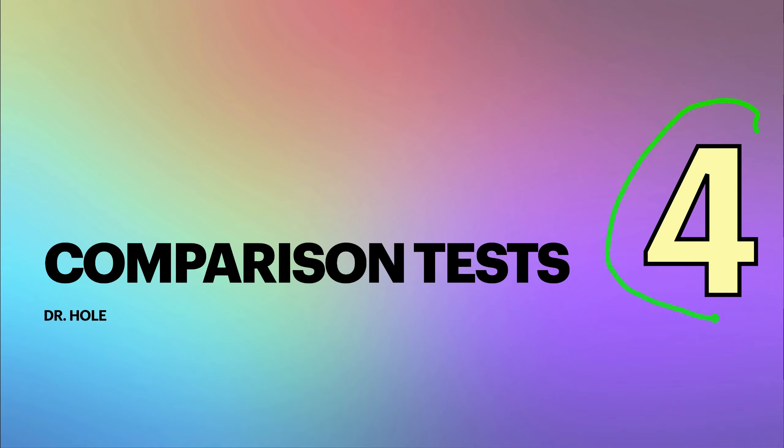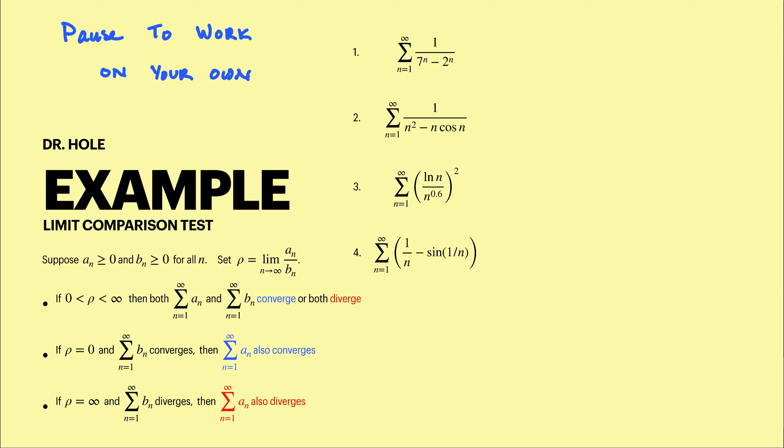Video four: comparison tests. In video three we looked at the limit comparison test. Here in video four we'll do examples applying LCT. Here are the four problems we'll consider. You can pause the video and work these on your own and come back. A general strategy is to look at the associated sequence and try and match it to a known series to compare with, and then make a guess as to whether it's going to converge or diverge.